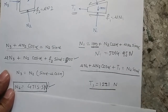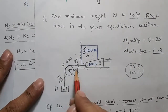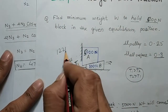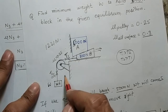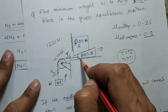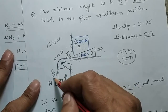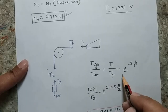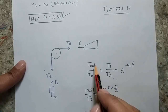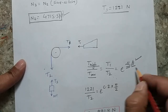Now I have calculated the tension T1 = 1221 Newton. Going back to the pulley, I already understood that T1 is greater than T2 because when equilibrium breaks, the block comes down, the wedge goes right, the rope on the block side is pulled upward — making it the driver side. So T1 > T2. Applying the pulley friction formula: T_high / T_low = T1 / T2 = e^(μβ). Beta is the angle of wrap. Please always remember that beta must be in radians, not degrees.